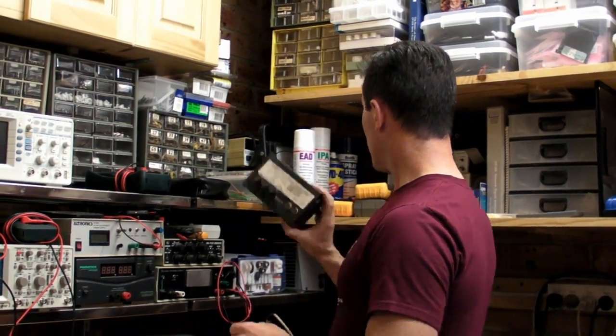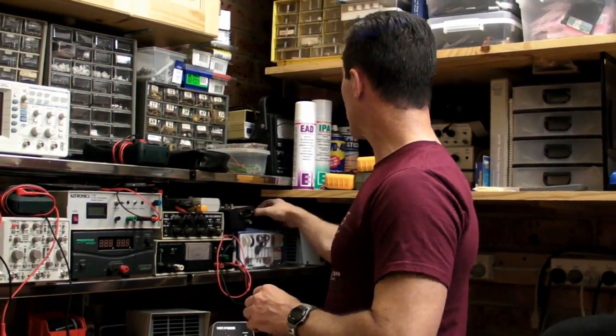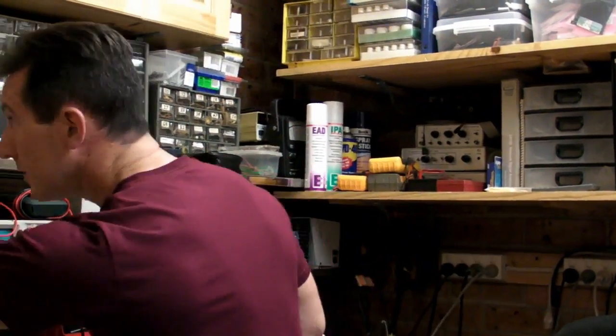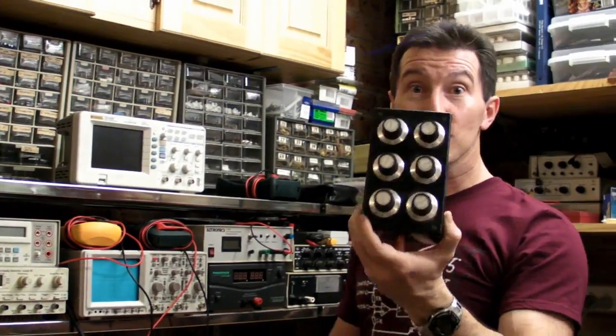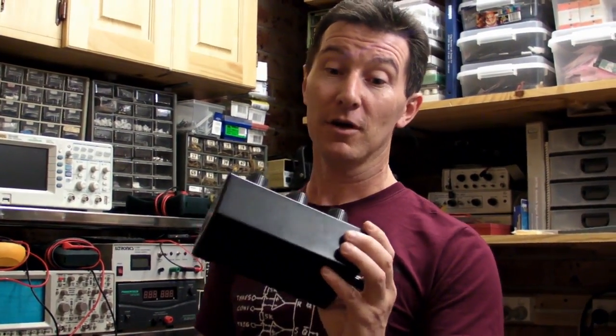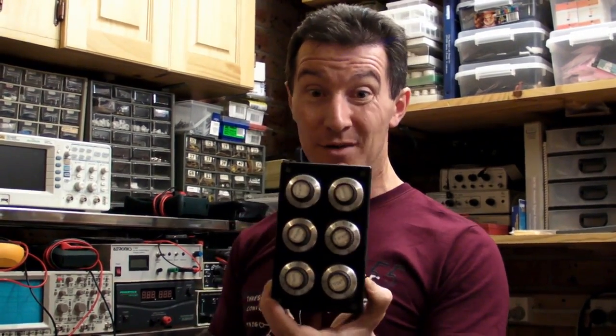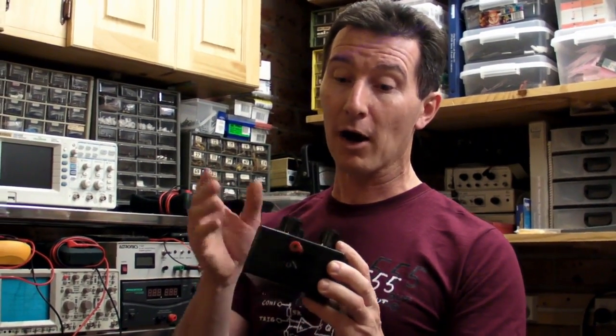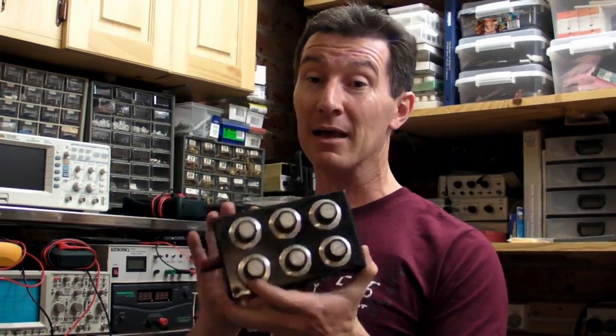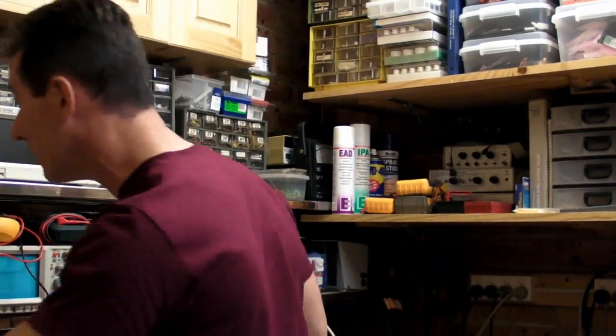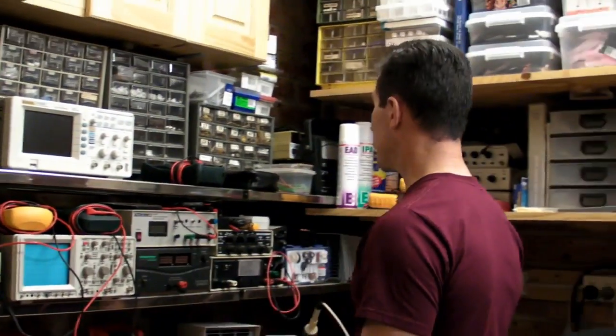What else have I got? I've got another function generator I've built. I've got an ESR meter. Ah, decade resistance box. This is one of the coolest things, one of the handiest things I own. I built this when I was probably 10 or 11 or something like that, so I was very old. It basically allows me to select any resistance from 1 ohm or 10 ohms up to 10 meg. And it's really handy. In fact, you need a couple of these. I should build another one.